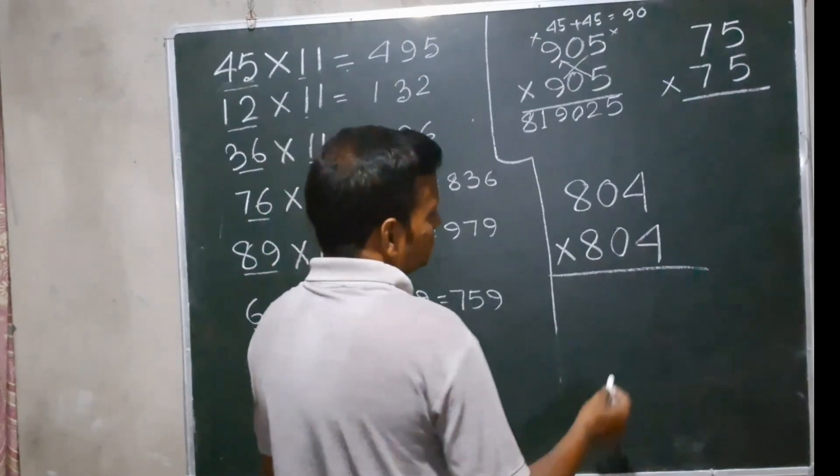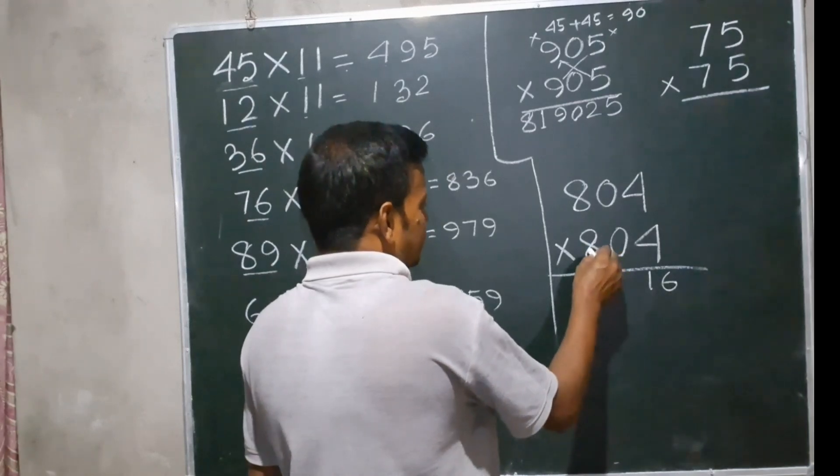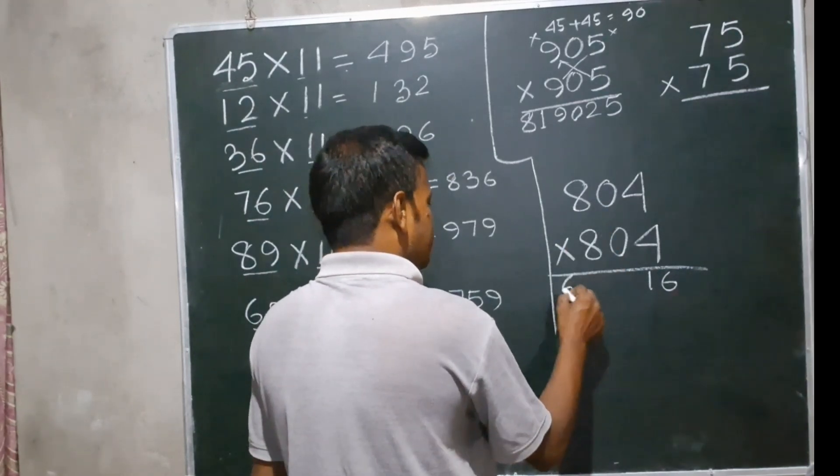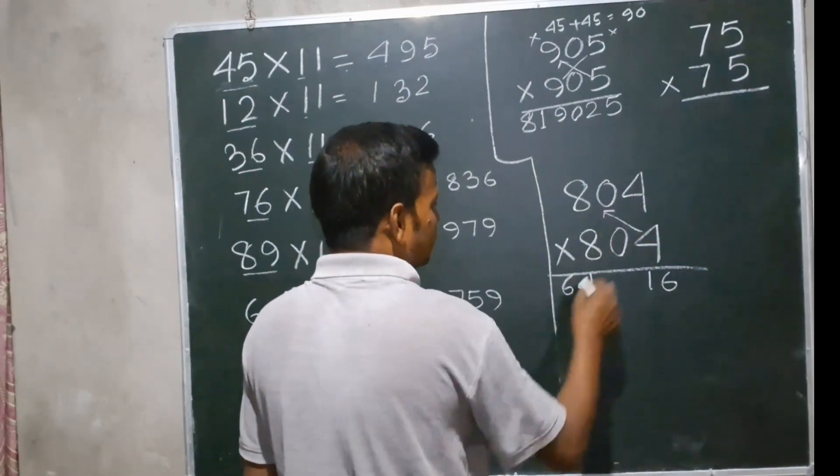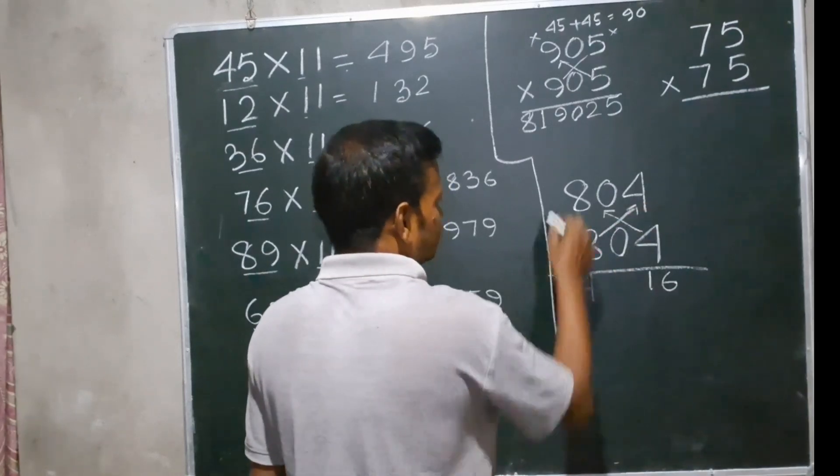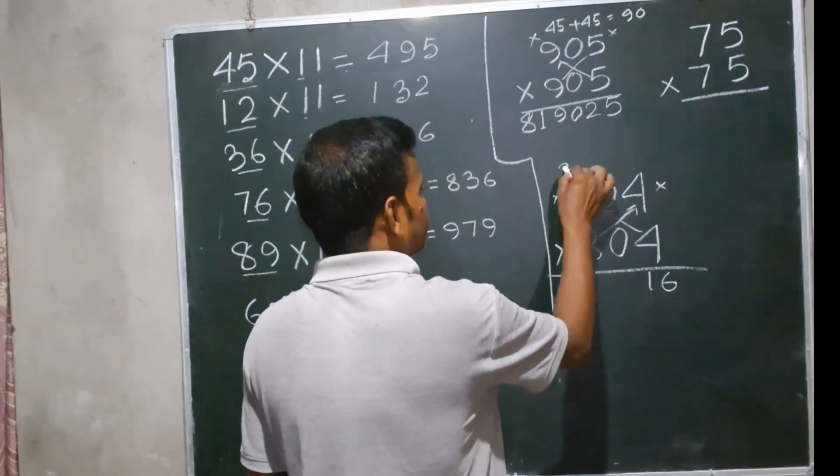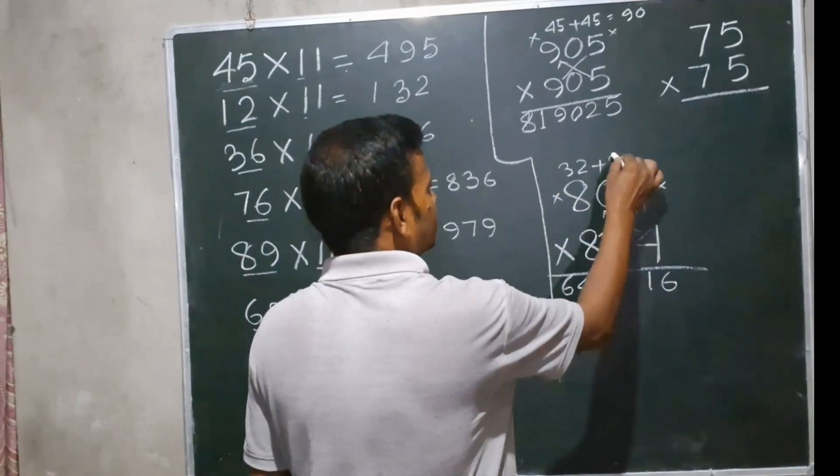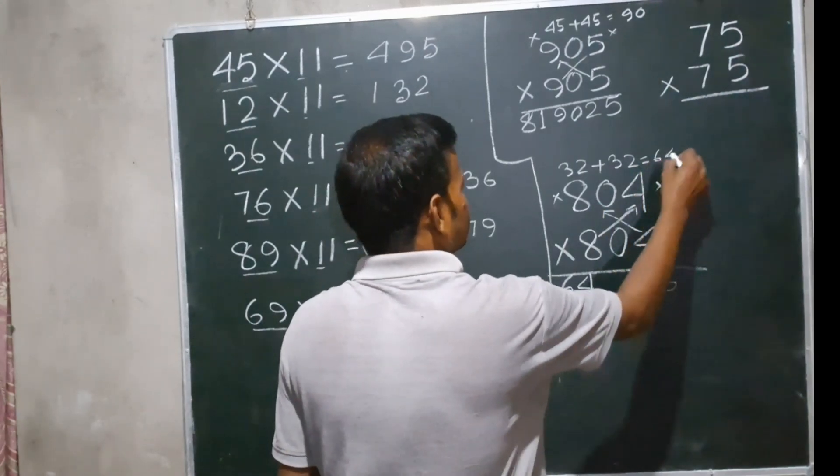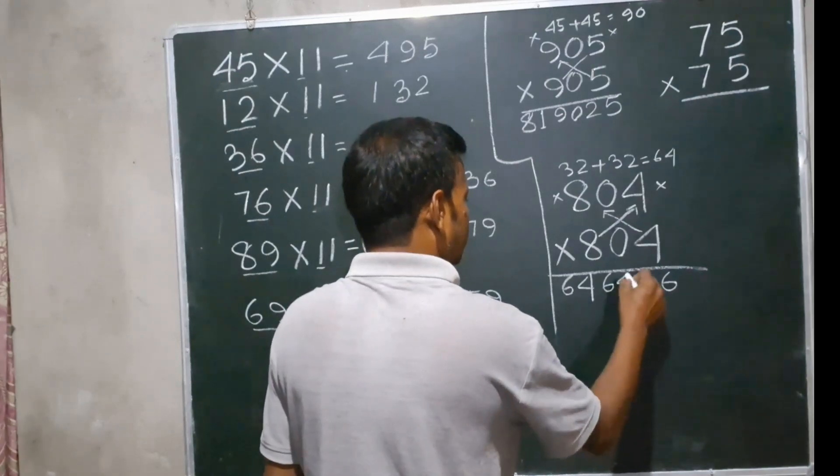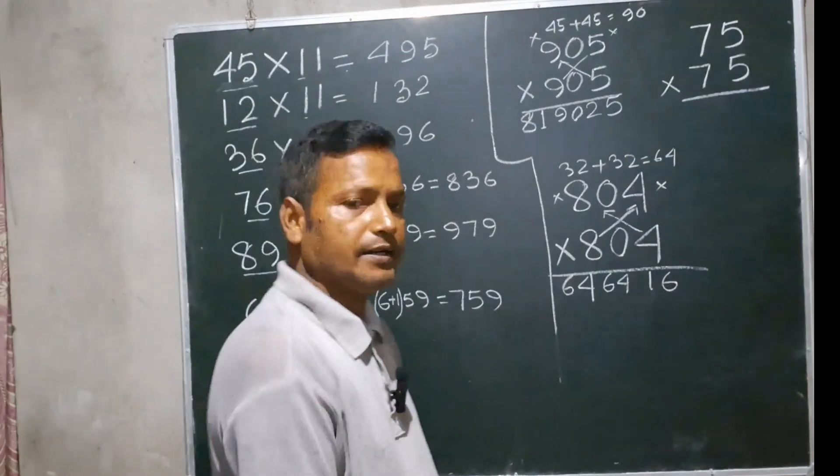Next one: 804 into 804. 4 times 4 equals 16. 8 times 8 equals 64. Now I have to multiply 8 with 4 and here also 8 with 4. 8 times 4 equals 32 plus 8 times 4 equals 32, so 32 and 32 equals 64. We write 64 here. The answer is 646,416.